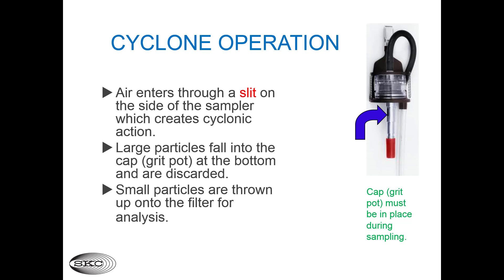Here's how cyclones work. The pump draws air in through a slit on the side of the device, creating rapid circulation of air in a cyclonic action. Large particles fall into the cap, also known as the grit pot, shown here in red at the bottom of the cyclone, and are discarded. Small respirable particles are thrown up by cyclonic action onto the filter for analysis. It is very important that you keep the grit pot on the cyclone during sampling — a common mistake for those new to air sampling is to remove it during the sampling period.